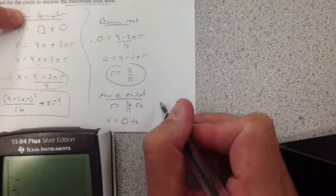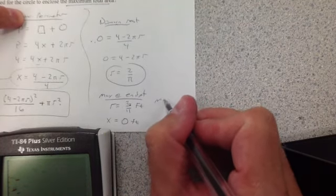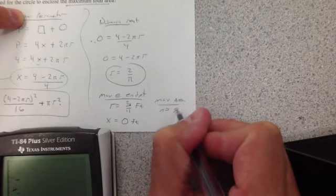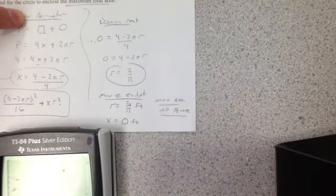So 0 feet. So basically, in order to maximize the area, to maximize area, there's going to be no square. Just all circle, in this case.